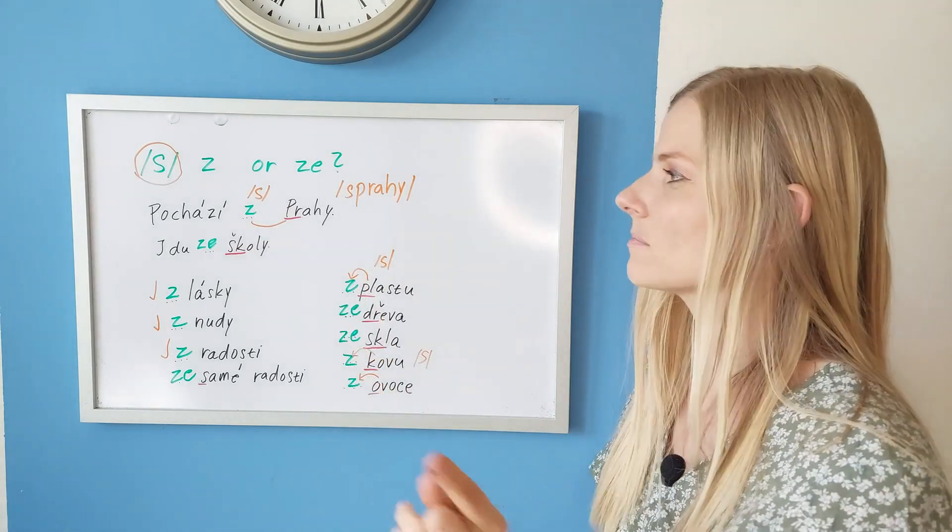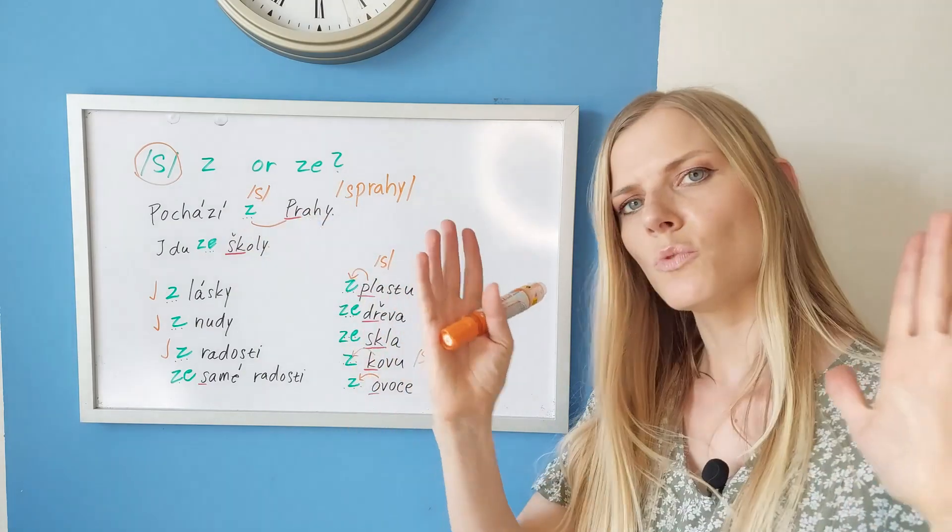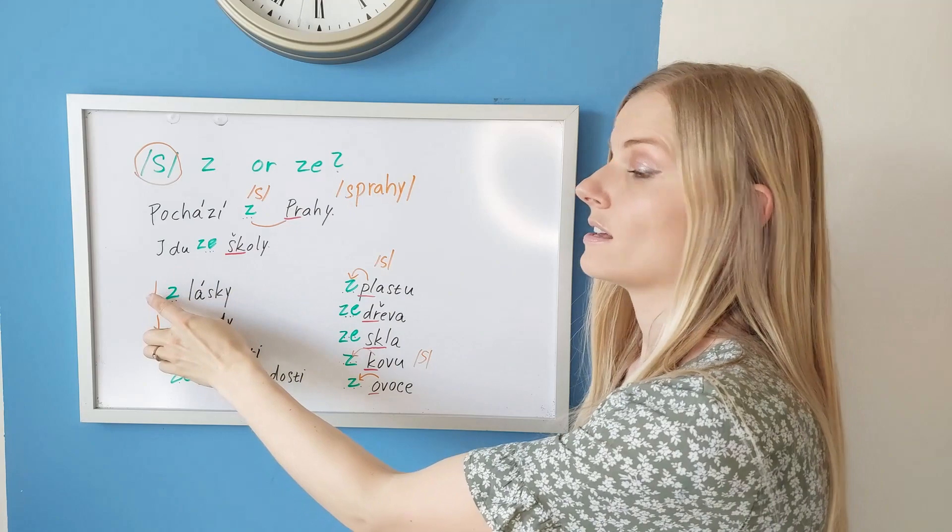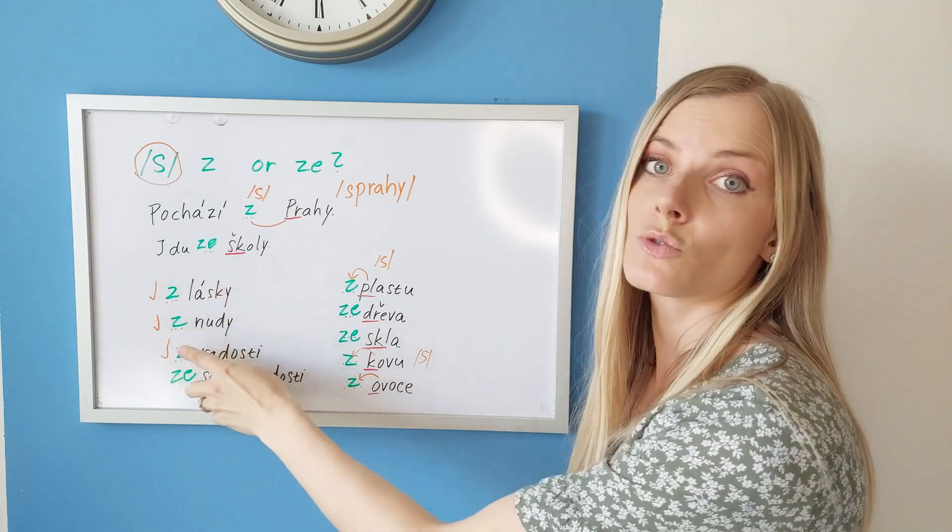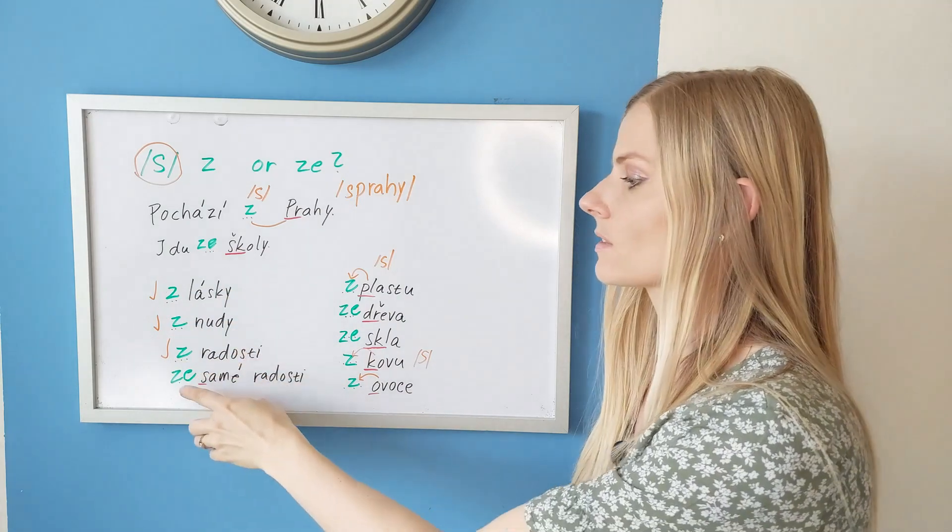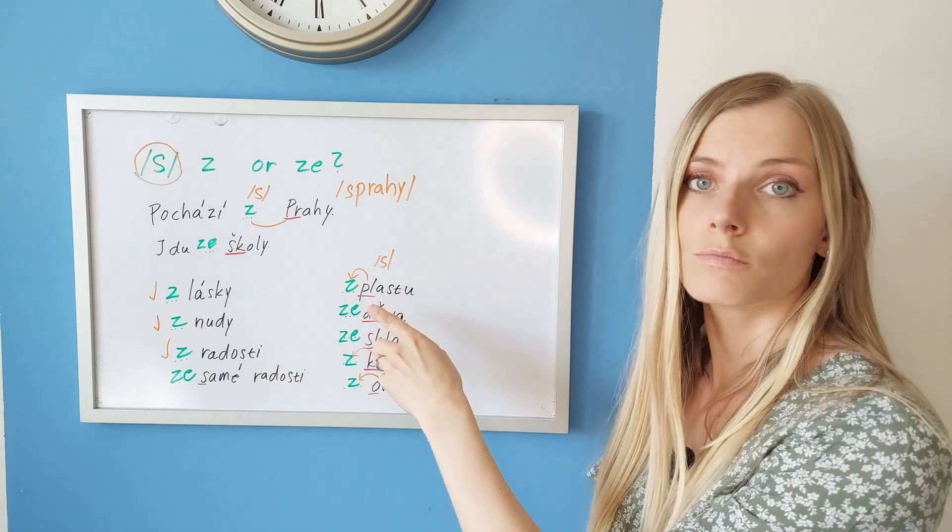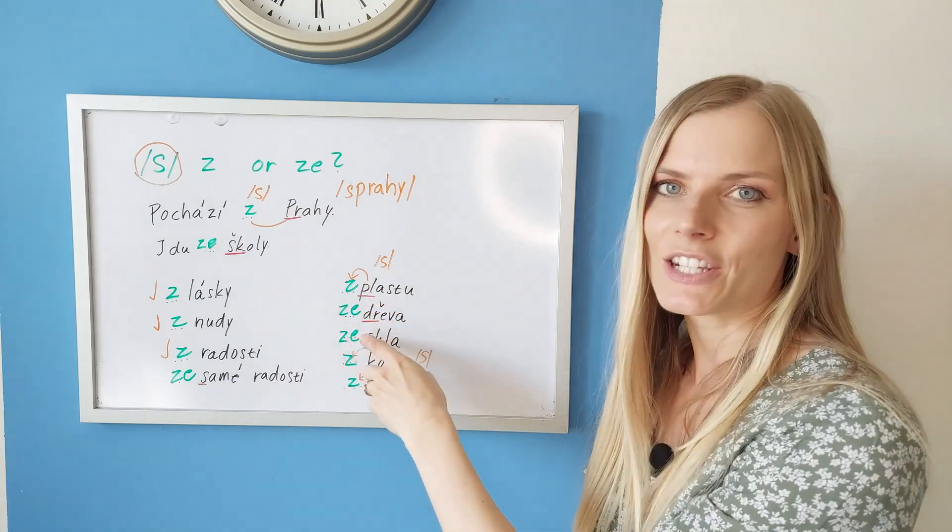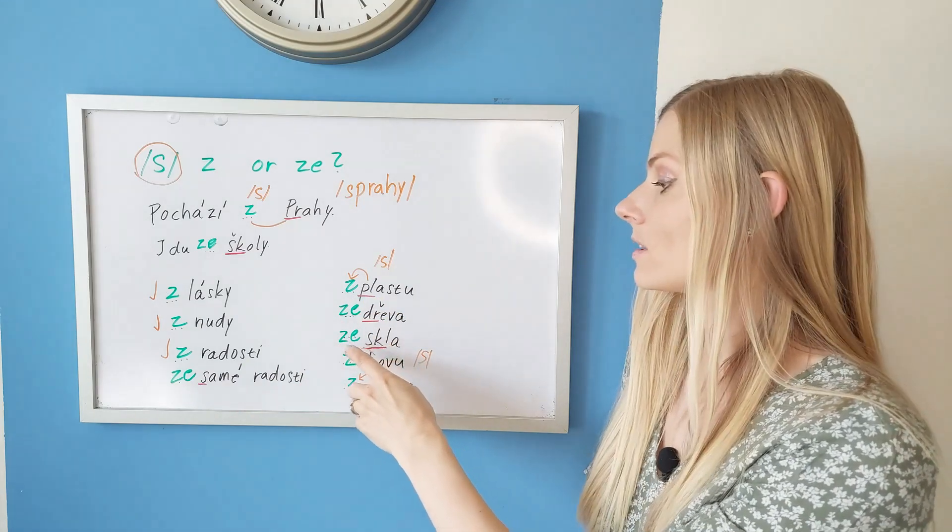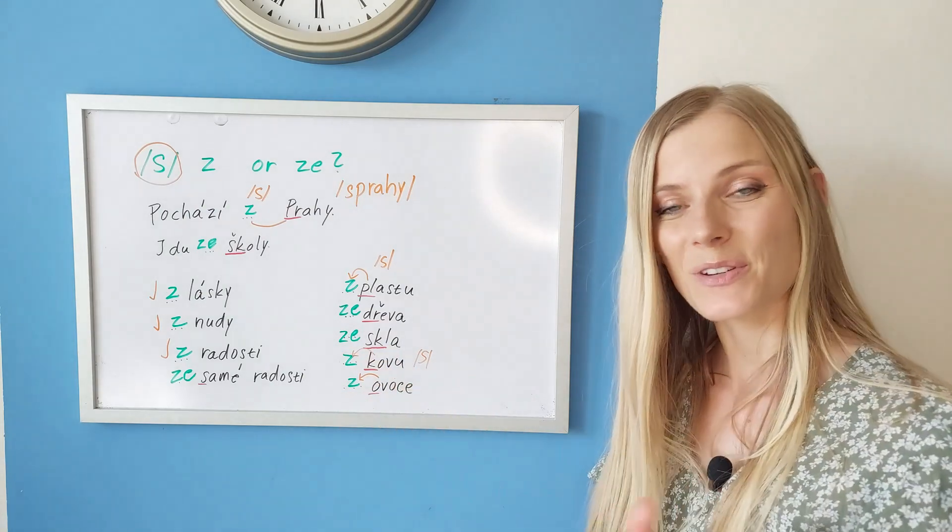Let's read these together. Repeat after me. Opakujte po mně. Z Prahy. Remember one word. Ze školy. Z lásky. Z nudy. Z radosti. Ze samé radosti. Z plastu. Ze dřeva. Ze skla. Z kovu. Z ovoce.